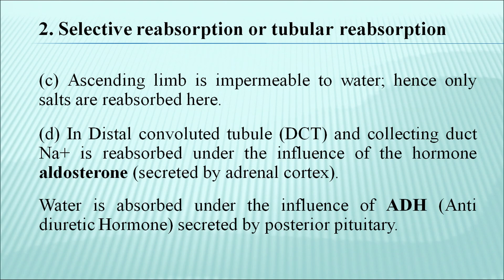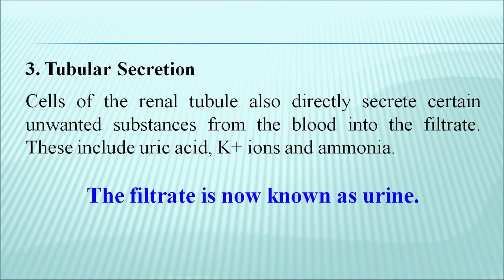In the distal convoluted tubule (DCT) and collecting duct, sodium is reabsorbed under the influence of the hormone aldosterone, which is secreted by the adrenal cortex. Water is absorbed under the influence of ADH (anti-diuretic hormone), secreted by the posterior pituitary, the master gland. As far as tubular secretion is concerned, cells of the renal tubule also directly secrete certain unwanted substances from the blood into the filtrate. These include uric acid, potassium ions and ammonia. After this, the filtrate is known as urine.